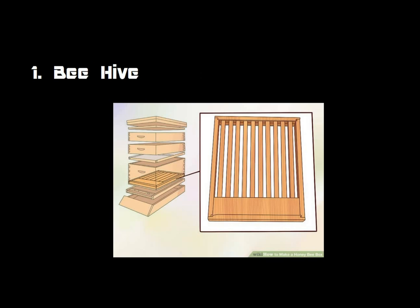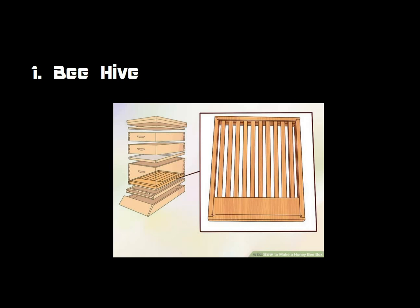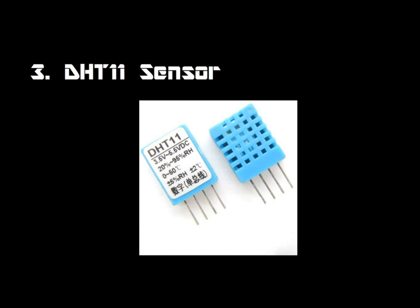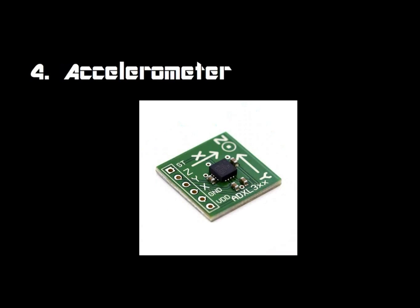The hardware components used are: a Beehive, which is the basic component. A Load Cell, used for weighing the box and notifying the user when it is filled with honey. A DHT11 sensor, used for sensing the temperature and humidity of the box and notifying the user. And an Accelerometer, used for detecting and notifying if the box is disturbed or displaced.